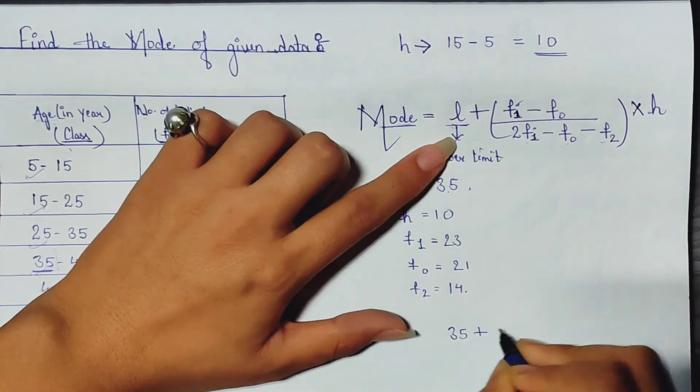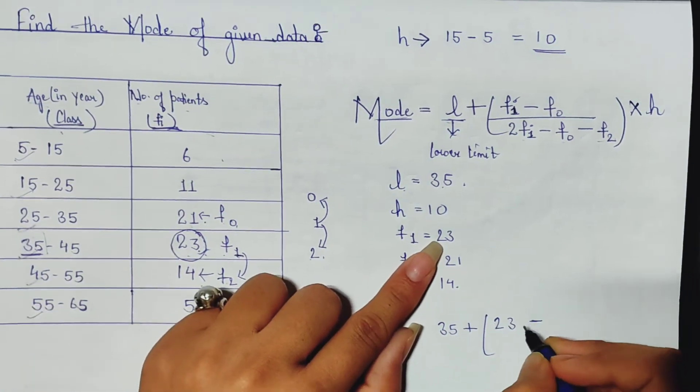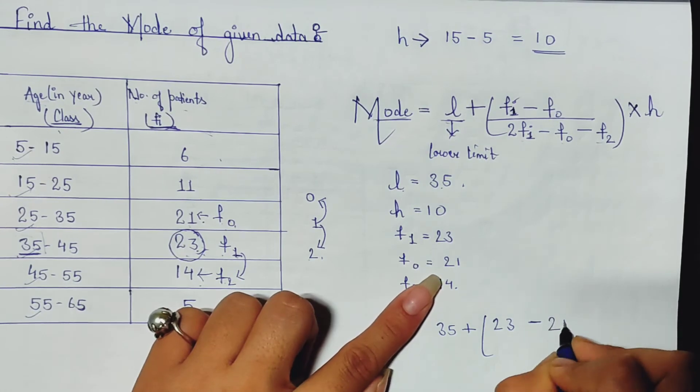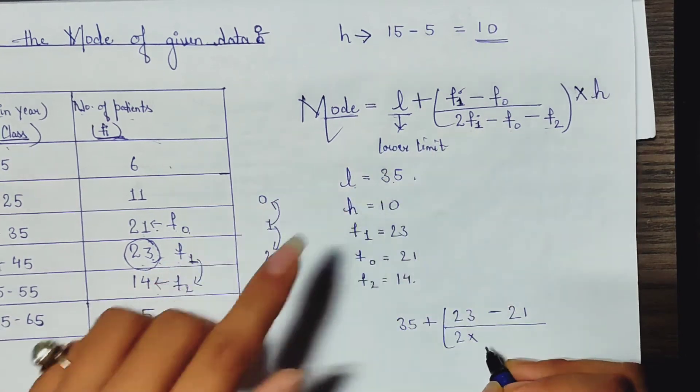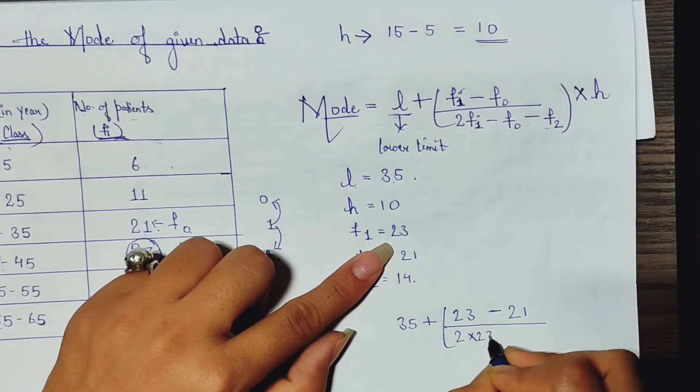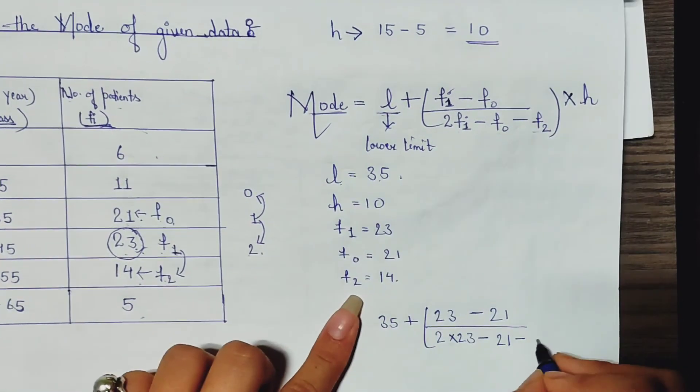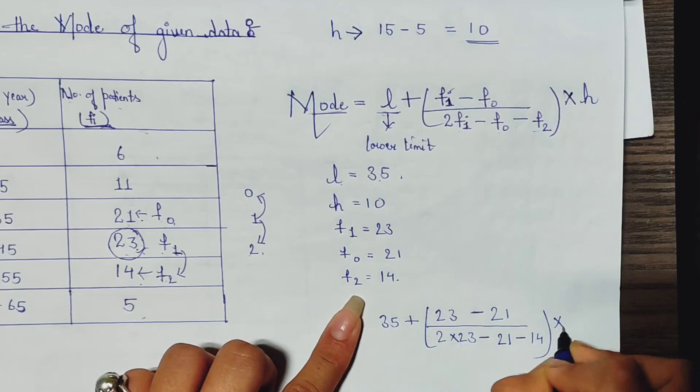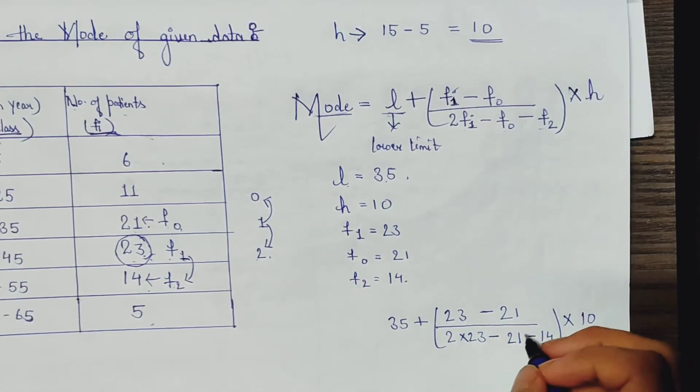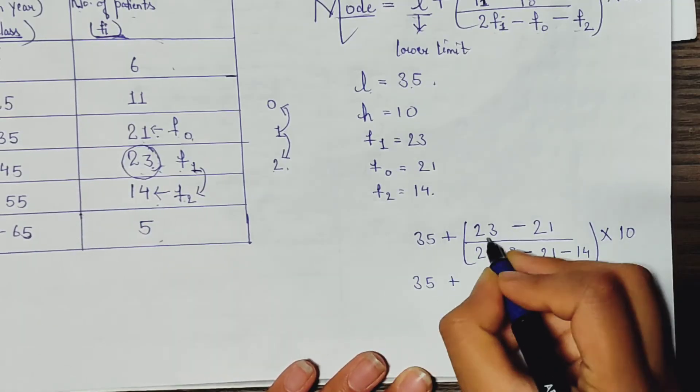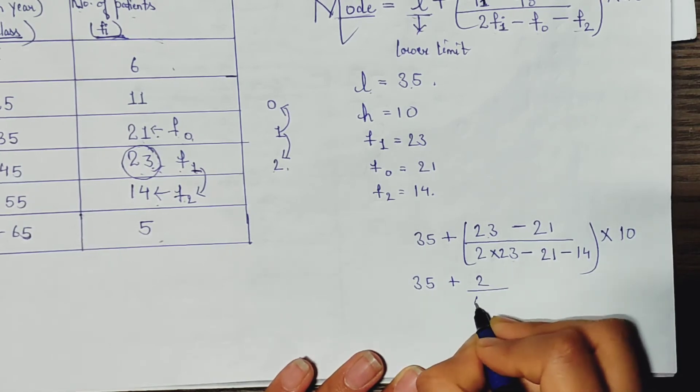...f1 is 23 minus f0, that is 21, minus f2, that is 14, into h. Value of h is 10. Now just solve it. 35 plus 23 minus 21, that is 2. 2 into 23, that is 46 minus 35 into 10.